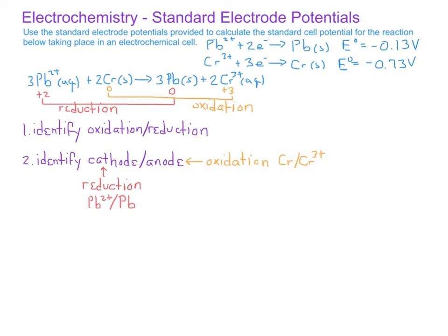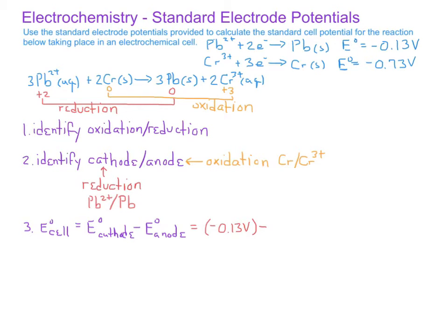Once we know which half-cell is the cathode and which is the anode, we can apply the equation: the standard cell potential equals the reduction potential for the cathode minus the reduction potential for the anode. Plugging in the cathode electrode potential for lead of negative 0.13 volts, and the anode electrode potential for chromium of negative 0.73 volts, we find that the standard cell potential is positive 0.60 volts.